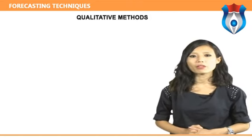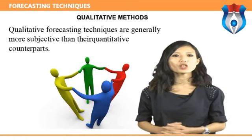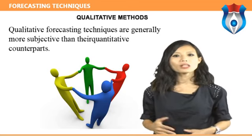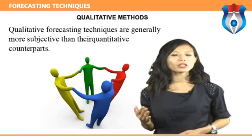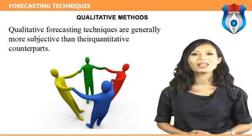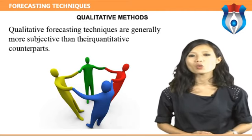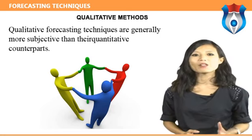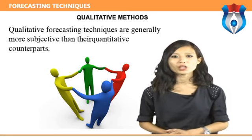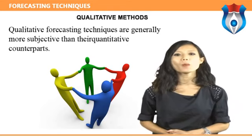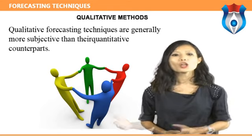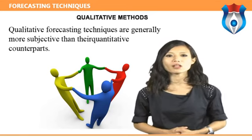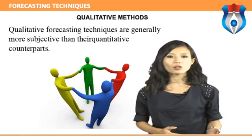Qualitative methods: qualitative forecasting techniques are generally more subjective than their quantitative counterparts. Qualitative techniques are more useful in the earlier stages of the product life cycle when less past data exists for use in quantitative methods. Qualitative methods include: the Delphi technique, salesforce forecast, opinions of salesforce members, Nominal Group Technique (NGT), jury of executive opinions, user expectation via surveys, questionnaires and other tools, and market research.